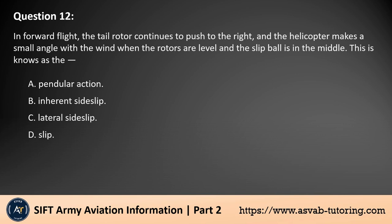Question 12. In forward flight, the tail rotor continues to push to the right and the helicopter makes a small angle with the wind, while the rotors are level and the slip ball is in the middle. This is known as: A. Pendular action. B. Inherent sideslip. C. Lateral sideslip. D. Slip. The answer is B. In forward flight, when the tail rotor continues to push to the right and the helicopter makes a small angle with the wind while the rotors are level and the slip ball is centered, this is known as inherent sideslip. This condition arises due to the rotor's thrust vector and the aerodynamic forces acting on the helicopter, causing a slight yaw to one side.